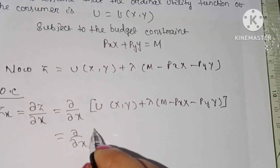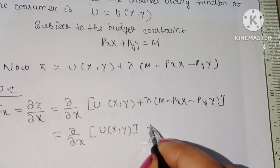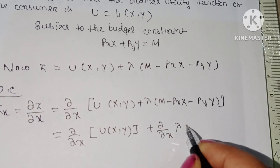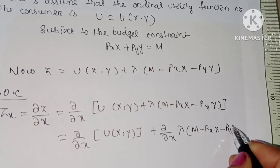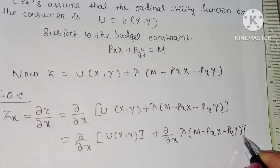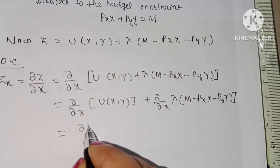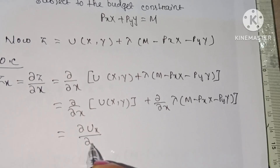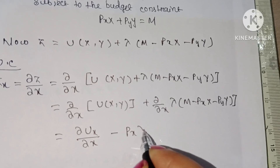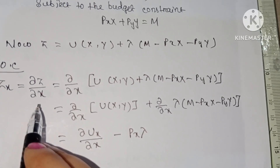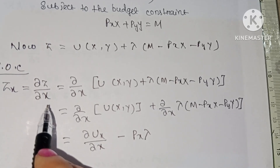This equals ∂/∂x of u(x, y) plus ∂/∂x of λ(m minus px·x minus py·y), which gives us ∂u/∂x minus λ·px, because we are calculating the partial derivative of the composite function with respect to x.